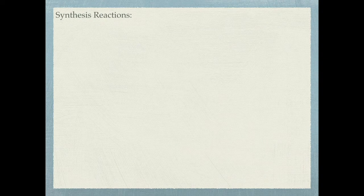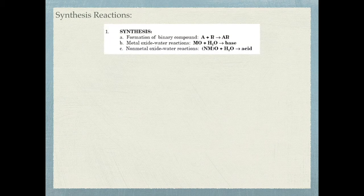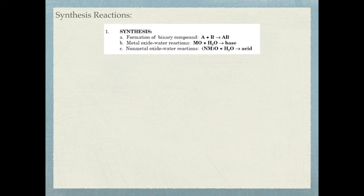A synthesis reaction is exactly how it sounds — you are synthesizing something, you are making it. You're going to have two different reactants combining together to form one product. The first type, 1A, is where you have two different elements, element A and element B, and they combine together to form a compound, AB.